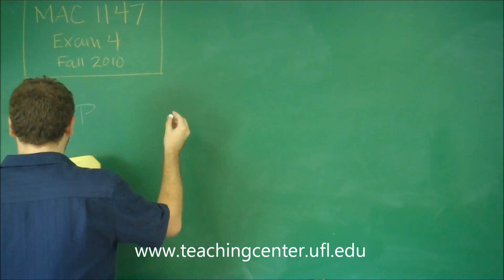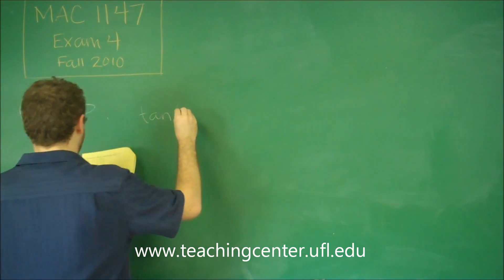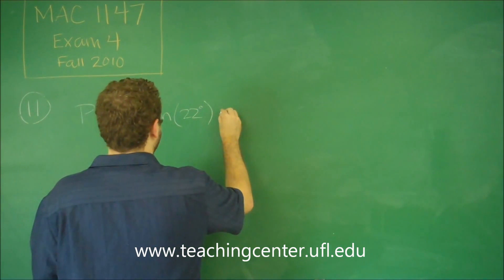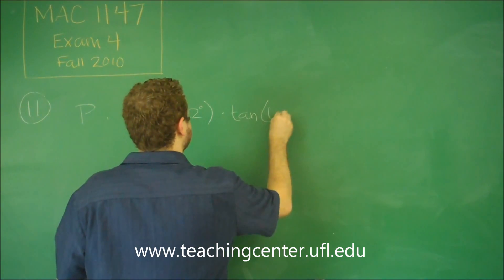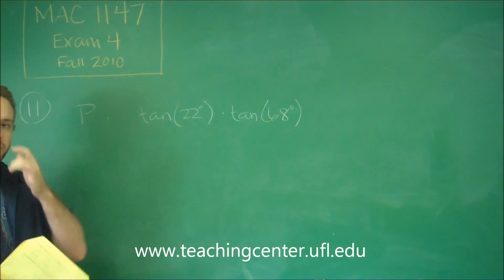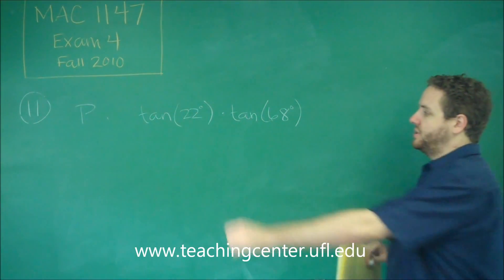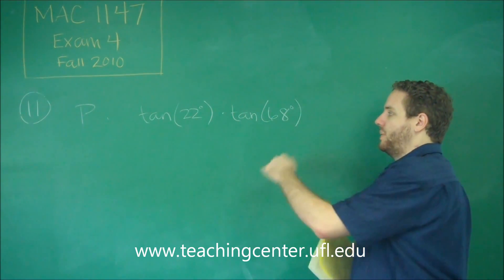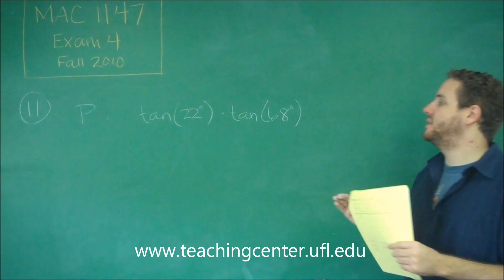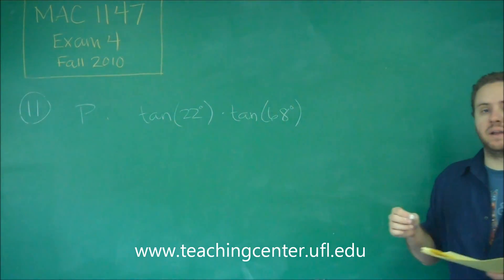So for P, we have tangent of 22 degrees times tangent of 68 degrees. What's important to know for this one is your complementary angles rule. You can see that 22 and 68 are complementary angles because they add to 90. So that must mean that one of these could be changed to cotangent of the other angle.